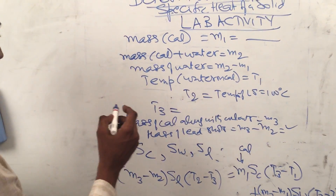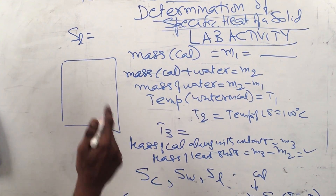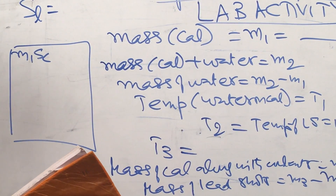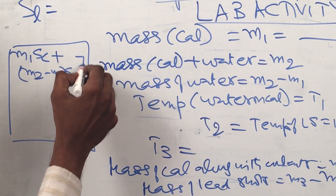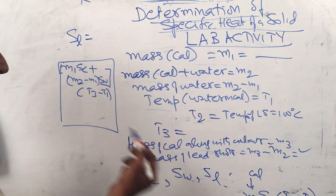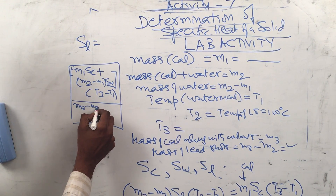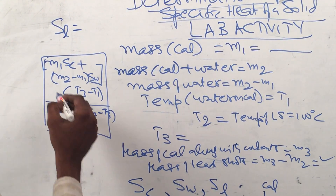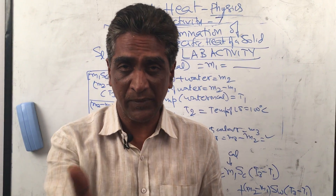Rearranging, the specific heat of lead shots is: SL = [m1 × SC + (m2 − m1) × SW] × (t3 − t1) divided by (m3 − m2) × (t2 − t3). This is straightforward algebra involving temperature differences — a neat algebraic equation.